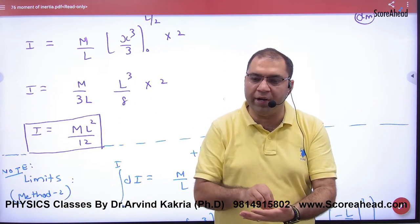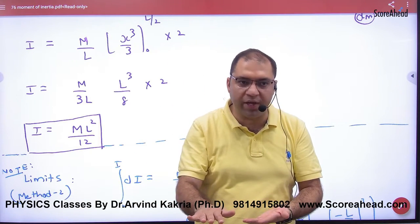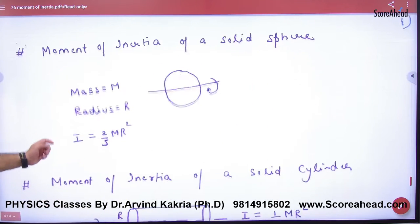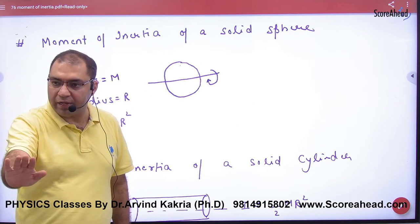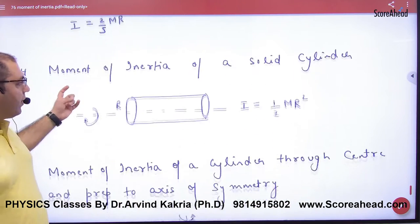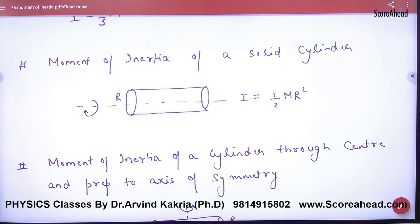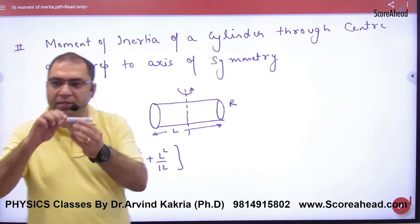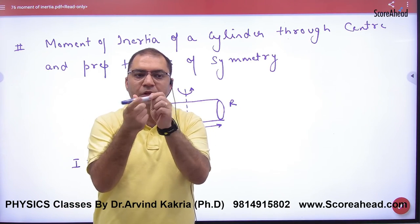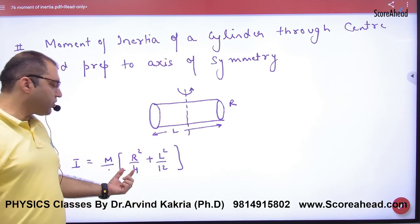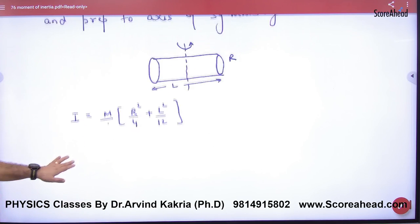We have now done: ring moment of inertia formula MR squared, disk formula half MR squared, and rod about central axis formula ML squared by 12. For the remaining shapes, just mark the formula — no derivation needed. Moment of inertia of a solid sphere is 2 by 5 MR squared. Moment of inertia of a solid cylinder spinning about its own axis is half MR squared. If the cylinder is oriented on its side, the moment of inertia is M into R squared by 2 plus L squared by 12.